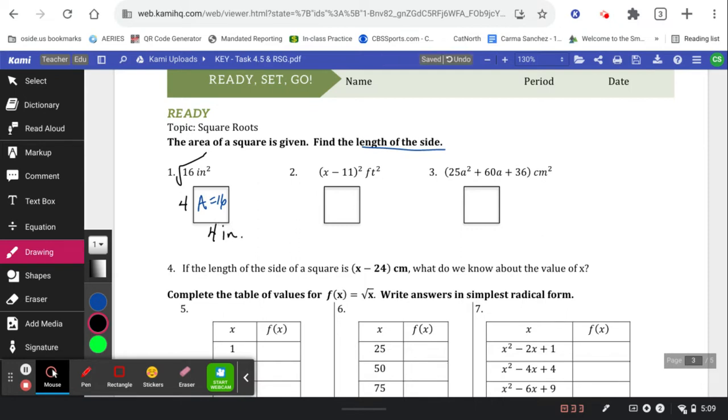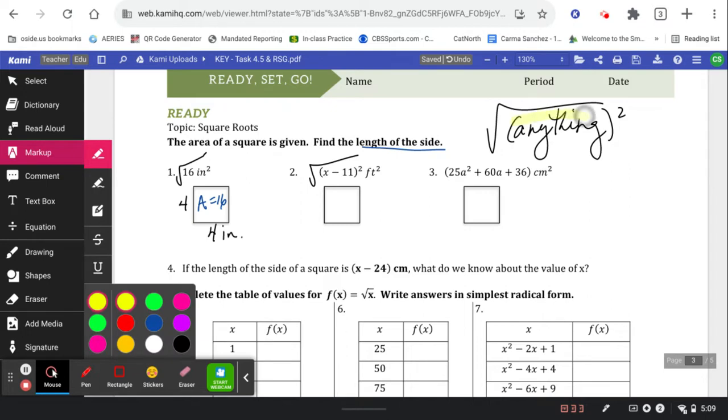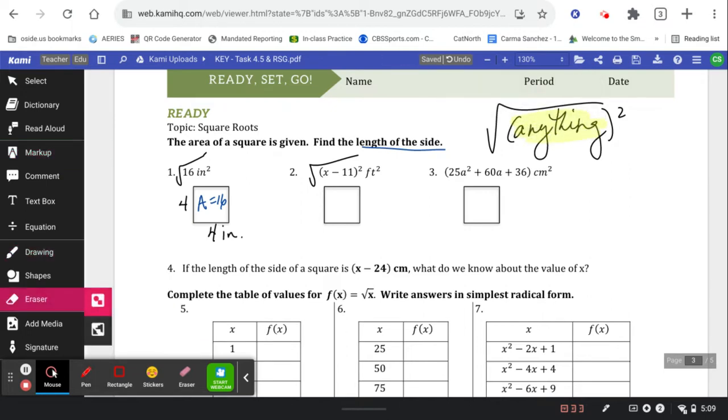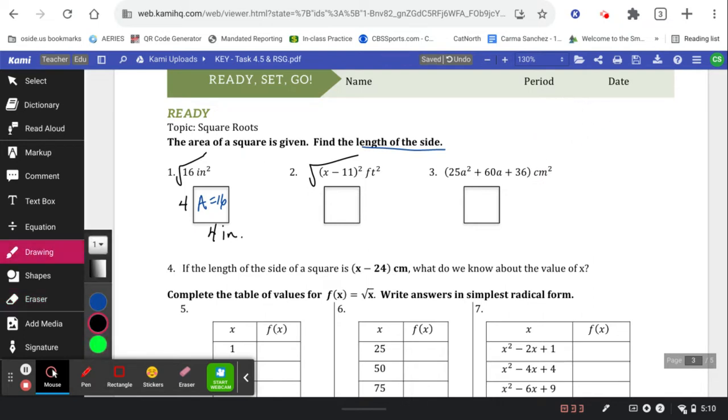Okay, go do the same thing to the next one, apply it. What's the square root of x minus 11 squared? Well, the square root of anything squared is just that anything. It means that essentially square rooting something cancels out the squared and just leaves you that anything. So what's the square root of x minus 11 squared? You got it, x minus 11 feet.